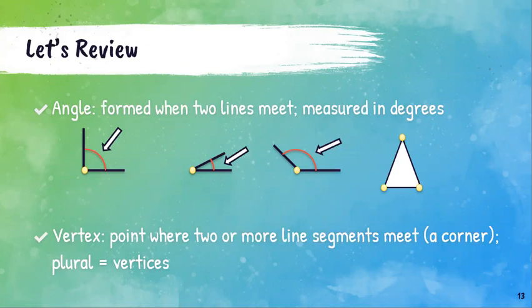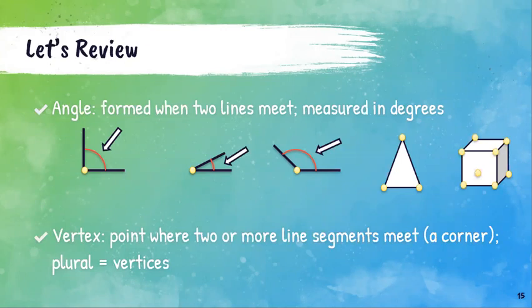And even though this cube is not a polygon, it still has vertices, because the definition of a vertex is just a point where two or more line segments meet. So this cube can have vertices. The picture of the cube — we could really only see seven corners, but there are eight vertices in a cube. I put an extra floating one there to show where that other vertex would be if we rotated the cube. So there are eight vertices in a cube.